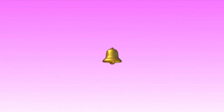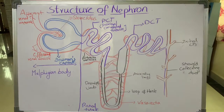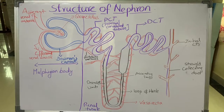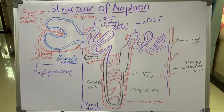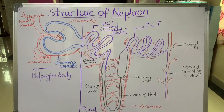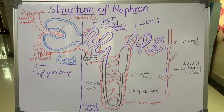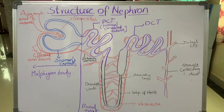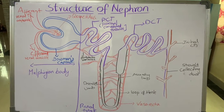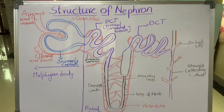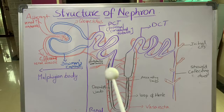Welcome to one more session of the excretory system. Today we are going to learn about the structure of the nephron. Nephron is a structural and functional unit of the excretory system. Each kidney contains approximately 1 million nephrons, and these nephrons are arranged in the cortical region of the kidney.